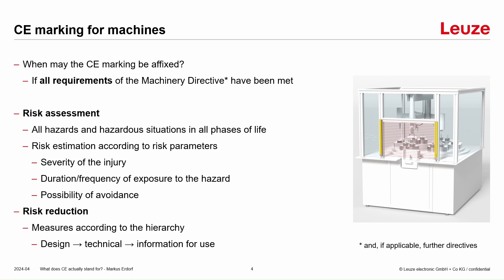Last but not least, a risk reduction must be done — measures according to the hierarchy. First we have to change the design, then we can do technical measures like safeguarding, and then we can provide information for use. We have to follow these rules.